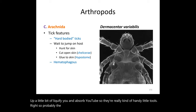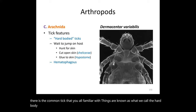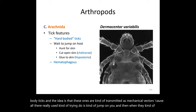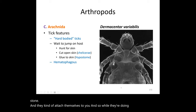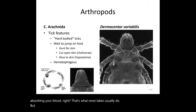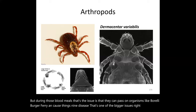The most infamous tick is Dermacentor — the common hard-bodied tick most people are familiar with. These ticks act largely as mechanical vectors. They use their chelicerae and a tool called a hypostome to cut through skin and attach themselves, then absorb blood. During these blood meals, they can transmit organisms like Borrelia burgdorferi, causing Lyme disease.